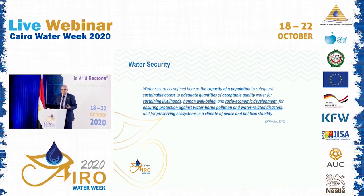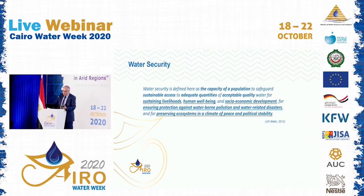Some people believe water is the main driver of the 17 SDGs. Let us look at the definition of water security. Water security is defined as the capacity of a population to safeguard sustainable access to adequate quantities of acceptable quality water for sustainable livelihoods, human well-being, and socioeconomic development, for ensuring protection against water-prone pollution and water-related disasters, and for preserving ecosystems in a climate of peace and political stability.